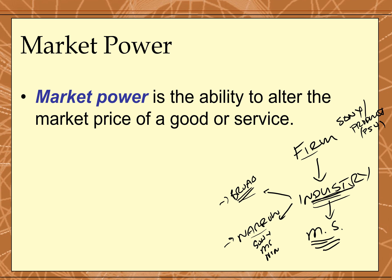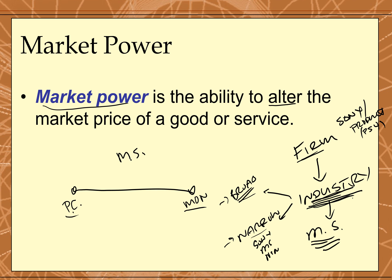We're going to be looking at market structure. One extreme case is perfect competition, which is what we talked about last chapter. Now we're going to be looking at the market structure at the other end of the spectrum: monopoly. In perfect competition, there is high, intense competition — many, many firms producing identical goods, and nobody has market power. Market power is the ability to alter the market price of a good, but every firm is so small you don't have an ability to do that.